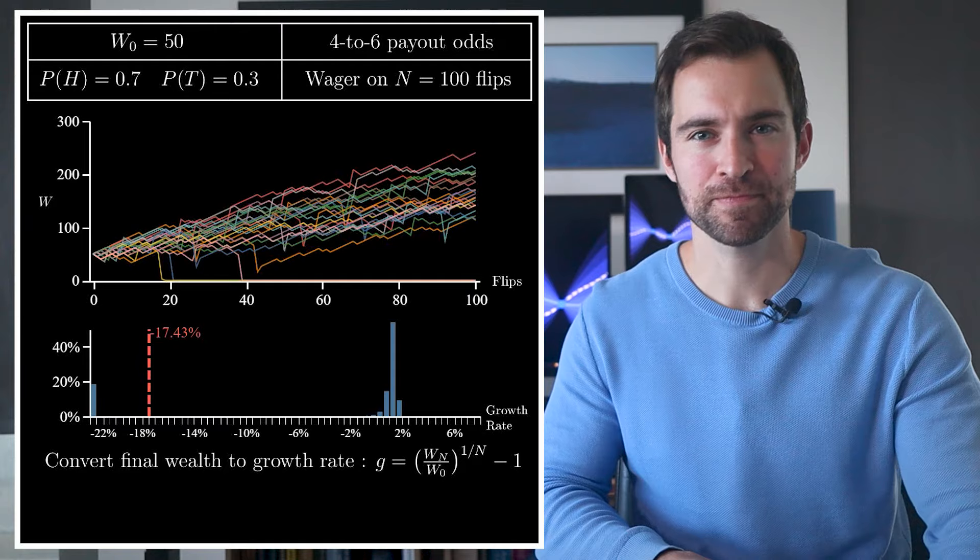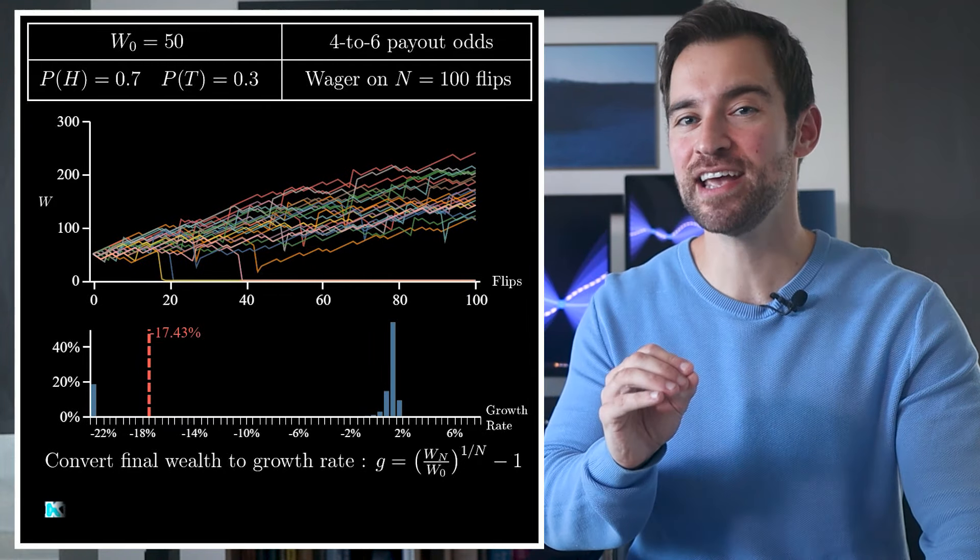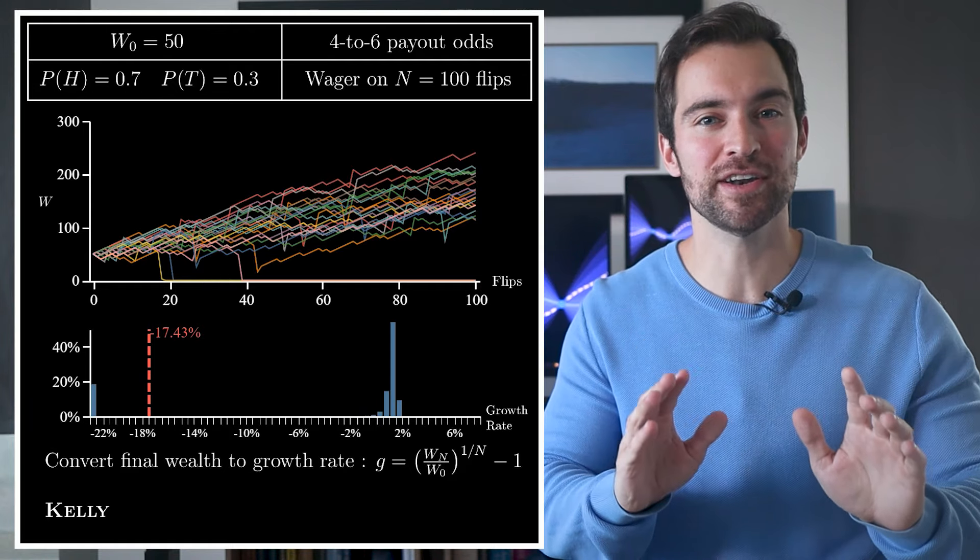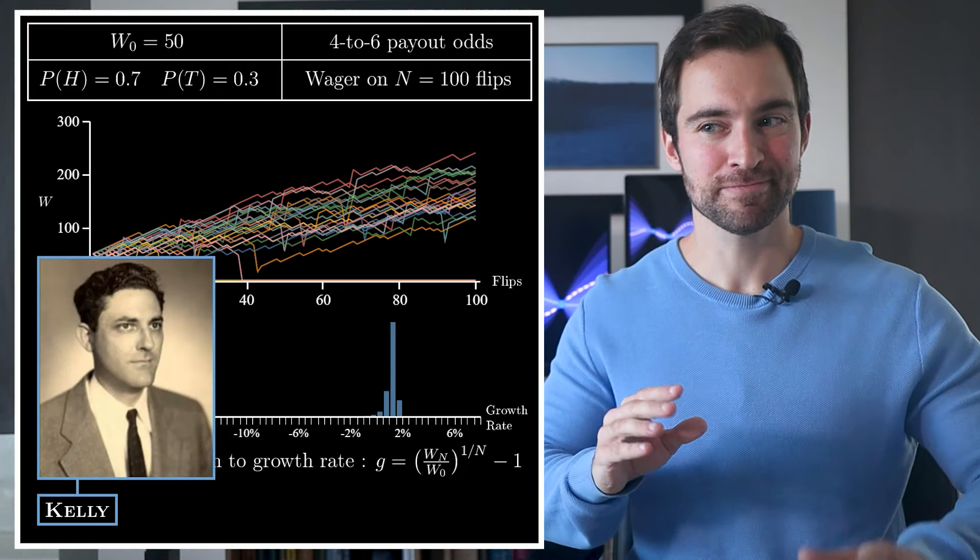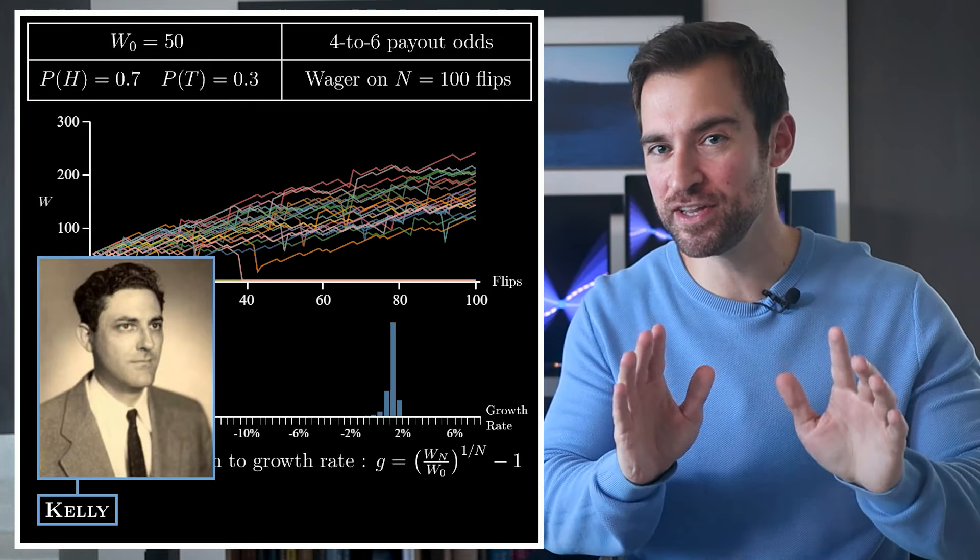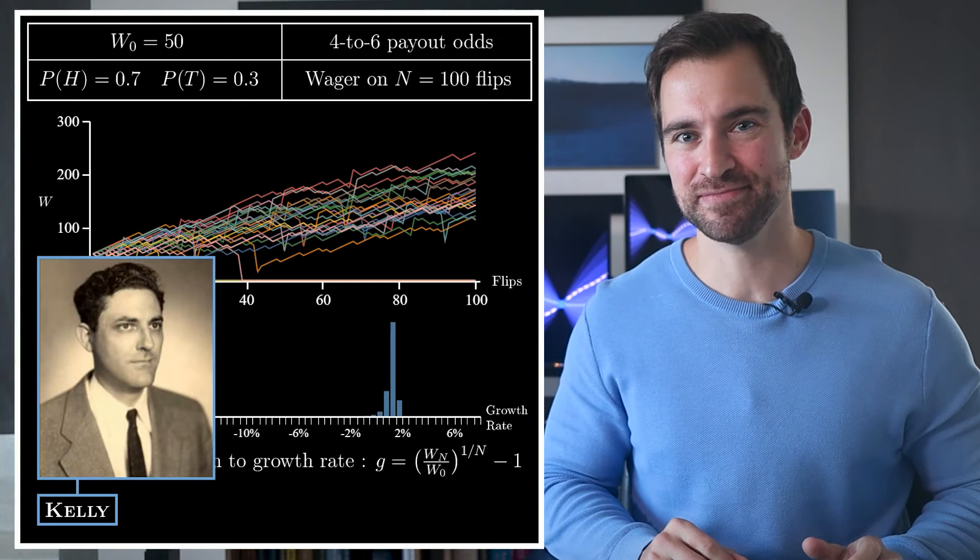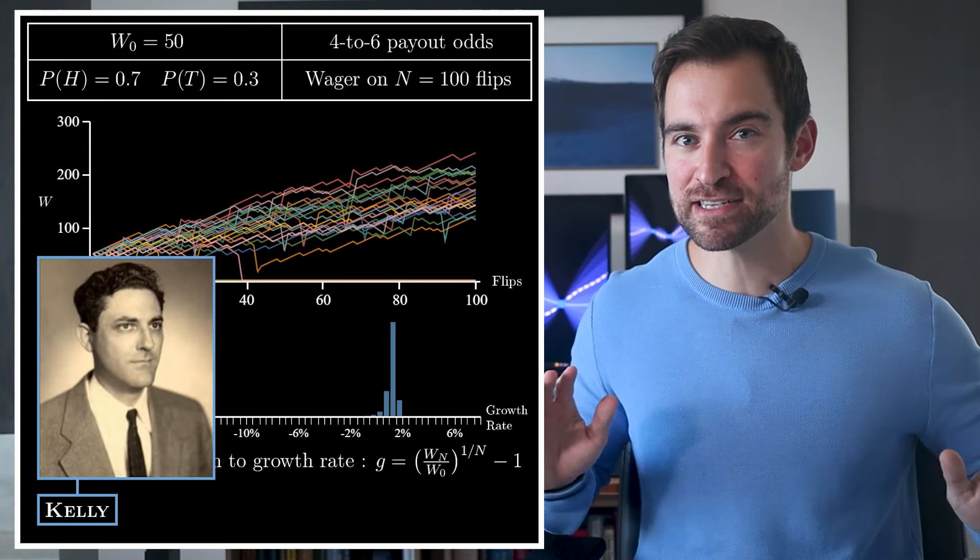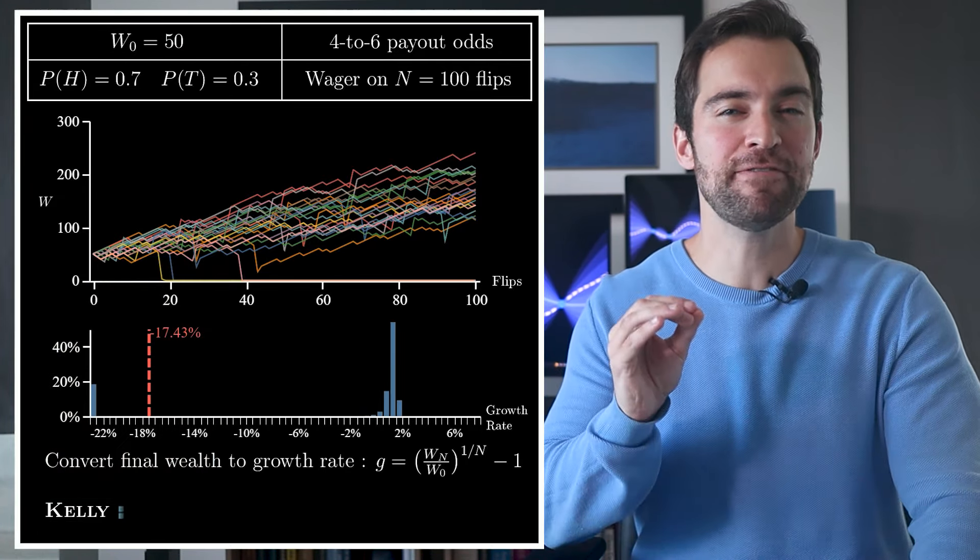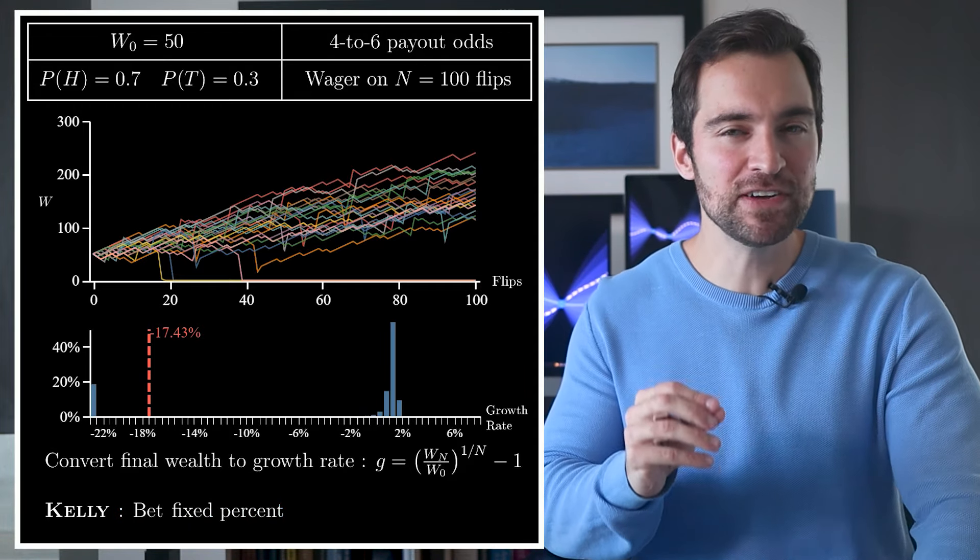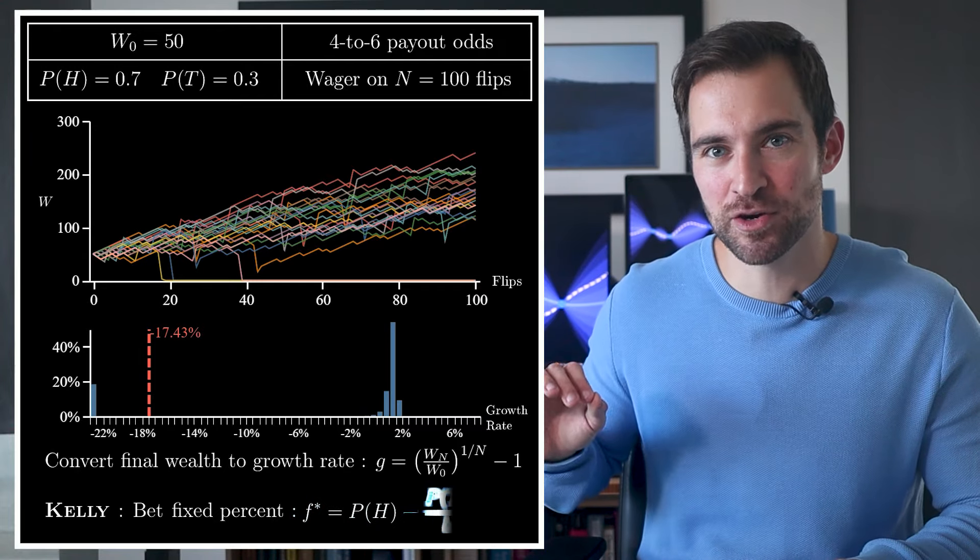Okay, so what's the best possible strategy? Well, for that, we need John Kelly from Bell Labs, who was working with the father of information theory, Claude Shannon. Kelly, someone who smoked six packs of cigarettes a day and died by the age of 41, really understood risk and gave us the solution. First, he told us that the best strategy out of all possible strategies involves betting a fixed percent of your current wealth.